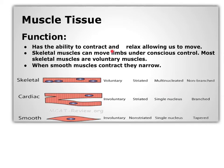Muscle tissues have the ability to contract and relax, which allows us to move. You can control your skeletal muscles. Most skeletal muscles are voluntary muscles, which means that you can control them. When smooth muscle contracts, it narrows.